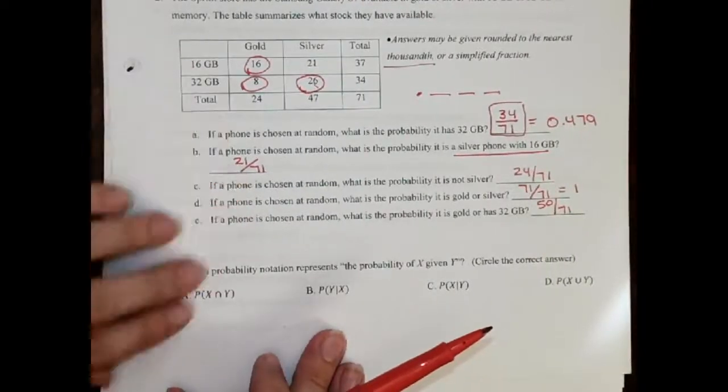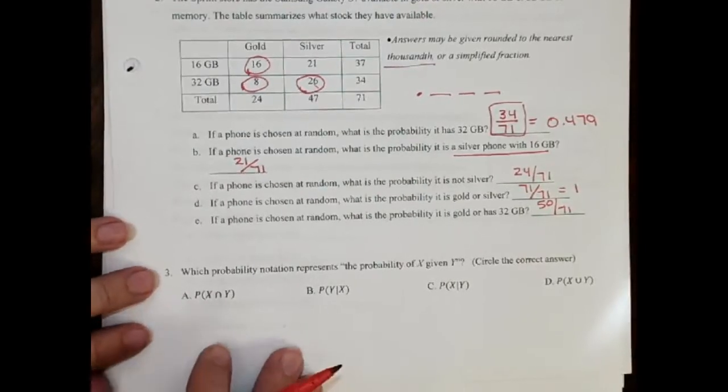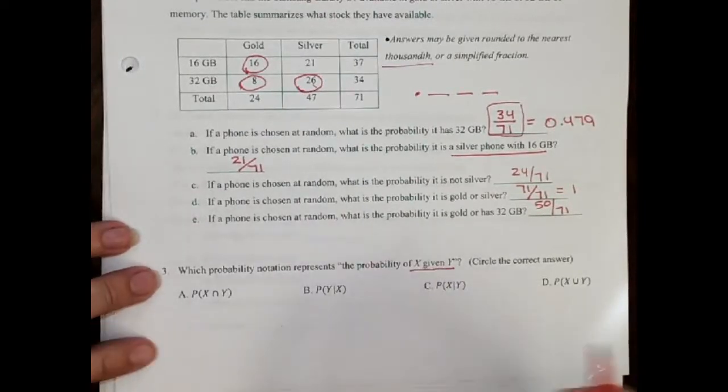Okay, we're going to do this question at the bottom here. This is number 3 on test A, or number 5 on test B. And this is really just, do you know what these mean? It wants me to find the one that says this, but let's just do each one.